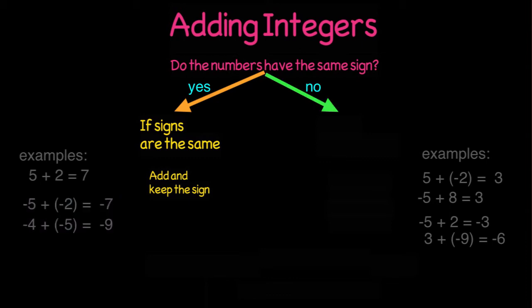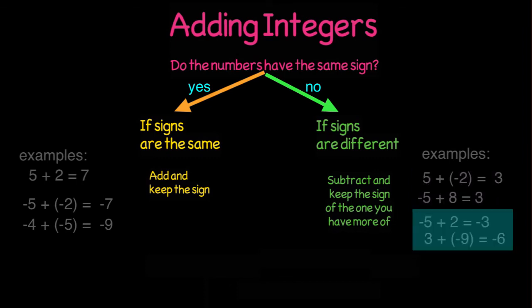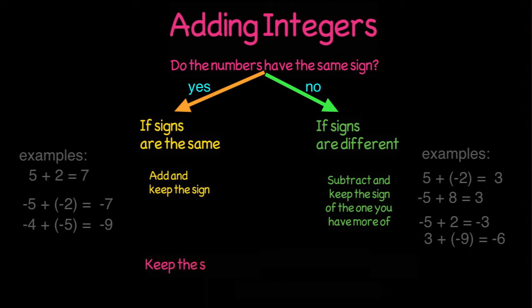In situations where we have one negative number and one positive number, we actually seem to be doing subtraction, and whichever one I had more of would be the sign of my answer. If I had more positives originally, then my answer would be positive. And if I had more negatives originally, then my answer would be negative. So if the signs are different, you subtract the digits, and the answer is the same as the number with a larger absolute value.